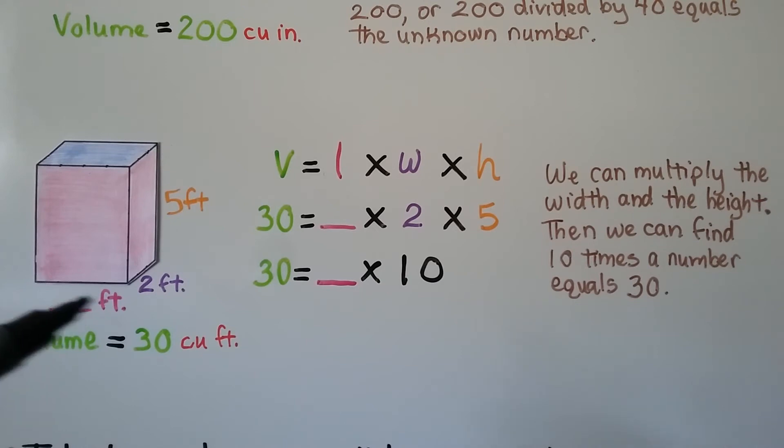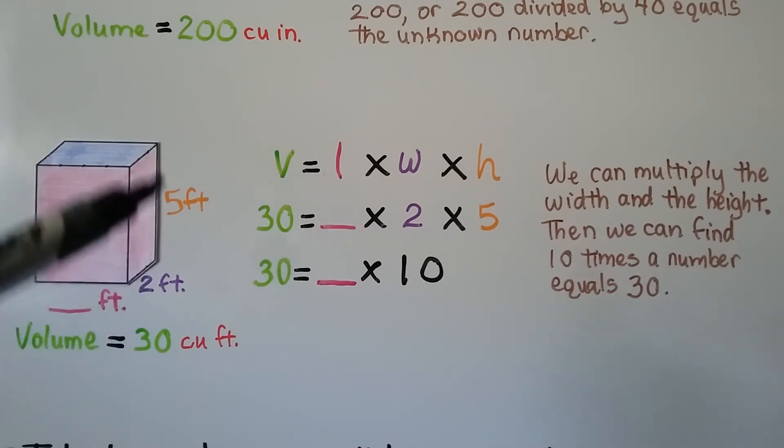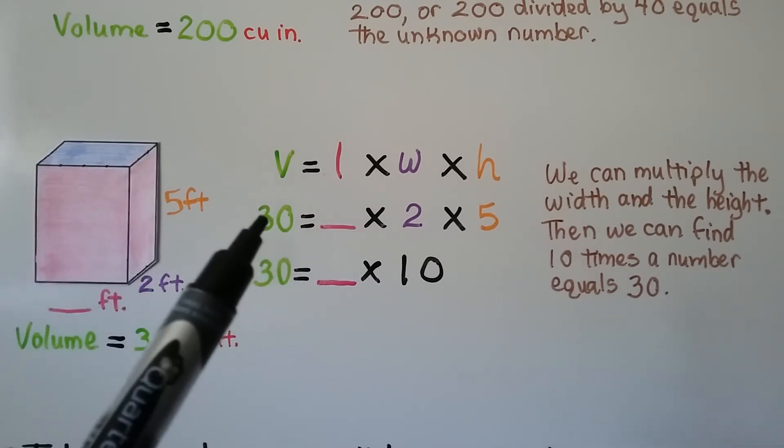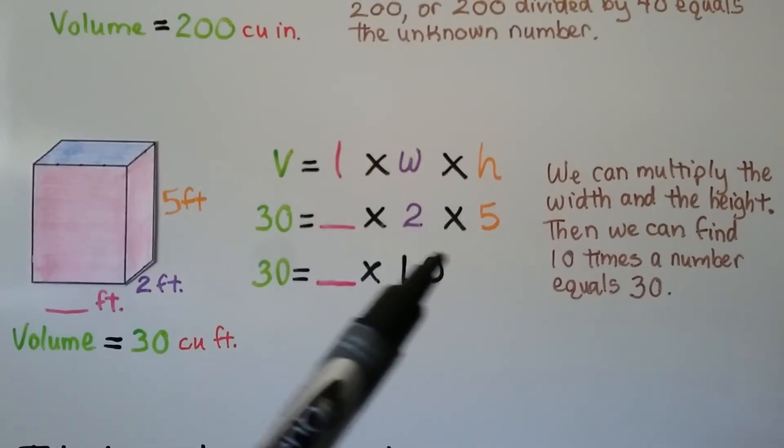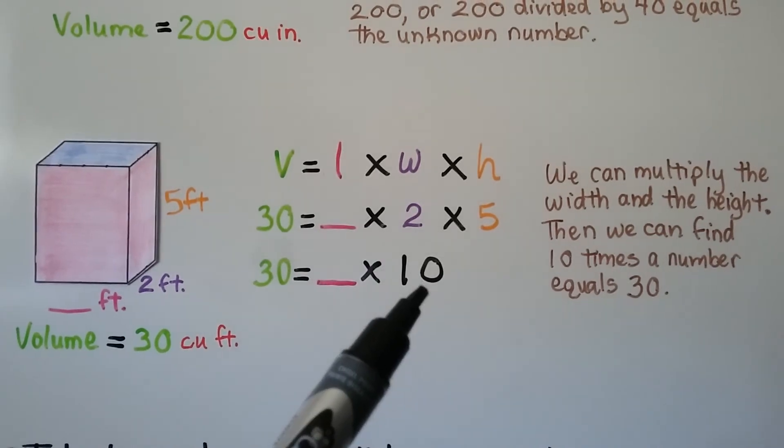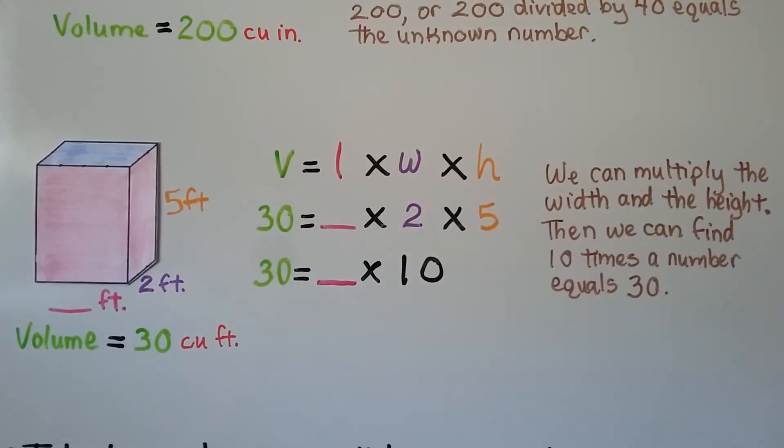For this one, the length is missing. It's telling us that the volume is 30 cubic feet. We don't have the length, but we do know that the width is 2 feet and the height is 5 feet. So 30 equals some length times 2 times 5. Well, 2 times 5 is 10. We multiply the width and the height. Then we can find 10 times some number equals 30. Well, 3 times 10 equals 30. So the length must be 3 feet.